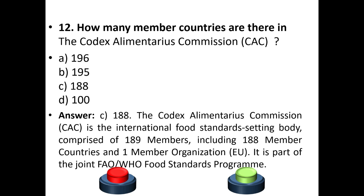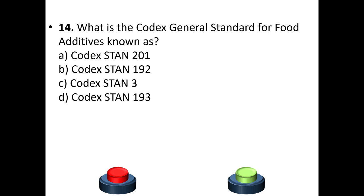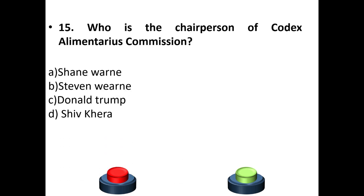The Codex Alimentarius Commission is part of the Joint Food and Agriculture Organization and World Health Organization Food Standards Programme. Fourteenth question: What is the Codex General Standard for Food Additives known as? A) Codex Standard 201, B) Codex Standard 192, C) Codex Standard 3, D) Codex Standard 193. The answer is option B — Codex Standard 192.